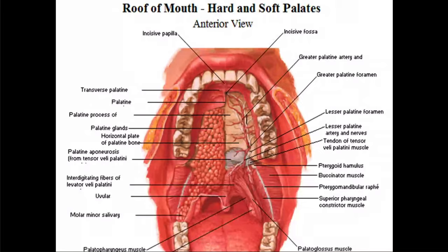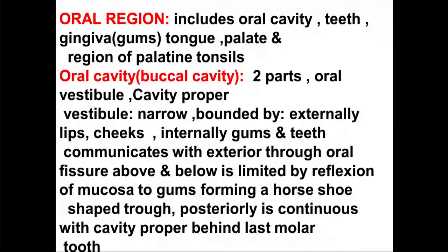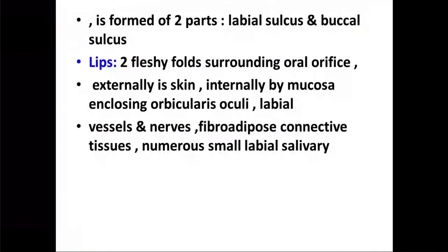The boundaries of the vestibule from the outer surface are the two lips with the oral fissure between them, bounded by the upper and lower lips, and then on each side the lateral wall, the cheeks. Internally are the gums and teeth of the alveolar arches. It communicates with the exterior through the oral fissure, and above and below is limited by reflection of mucosa to the gums, forming a horseshoe-shaped trough. It is formed of two parts: the labial sulcus and the buccal sulcus.